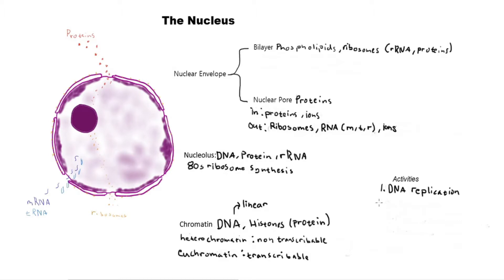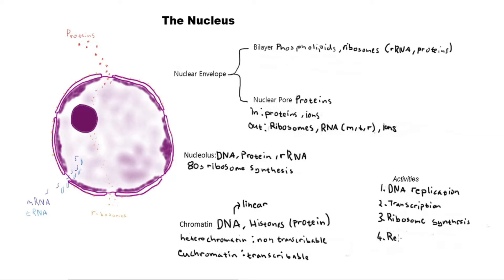What else goes on in the nucleus? Since the nucleolus makes ribosomes, we can say the nucleus as a whole is involved in ribosome synthesis. These are the main activities performed in the nucleus. One more thing to note: the nucleus itself replicates during mitosis and meiosis. We'll get into that later, but I'm putting it to your notes now as we're cataloguing everything that goes on in these components.